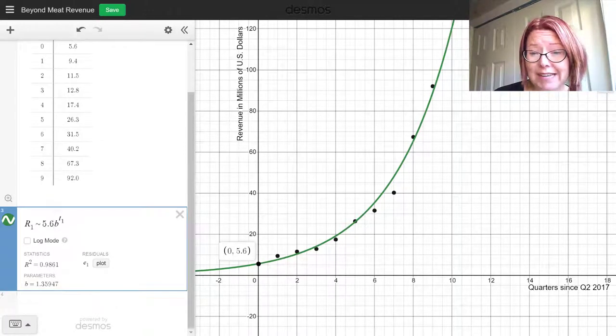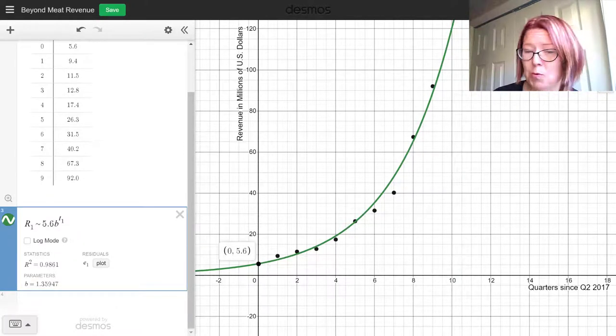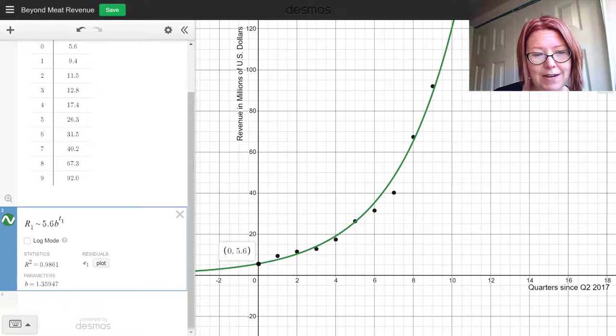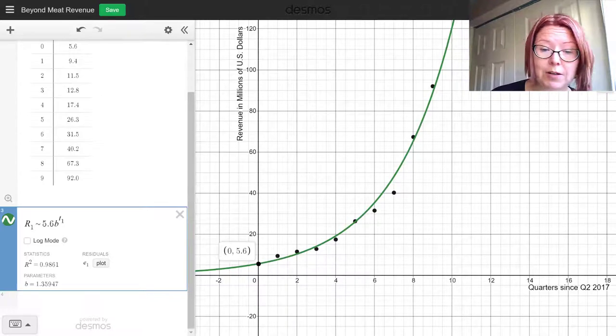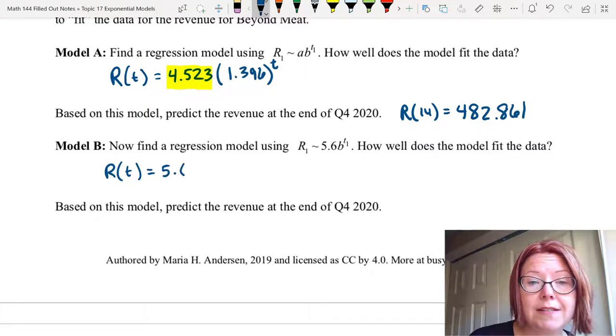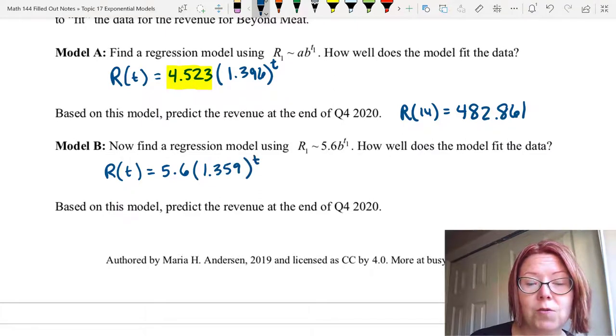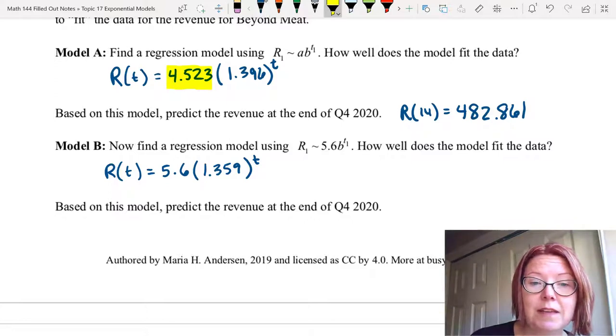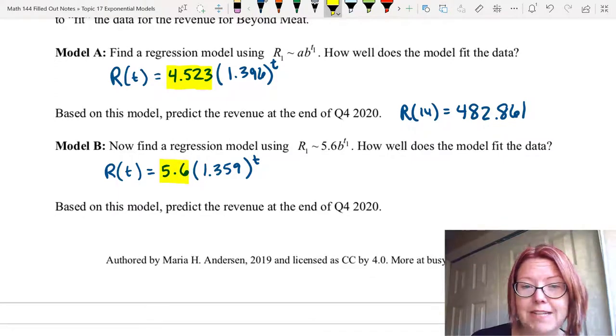Now what you'll immediately see is the model has shifted slightly to now go through a y-intercept of 5.6. Like the other model, this one hits some of the points and has points scattered both to the left and right of it. The growth factor in this case is 1.359. Let's go and write this model in our notes. So this model is capital R of t equals 5.6 left parentheses 1.359 right parentheses to the t. So here we forced the y-intercept to be the actual initial value of the data.